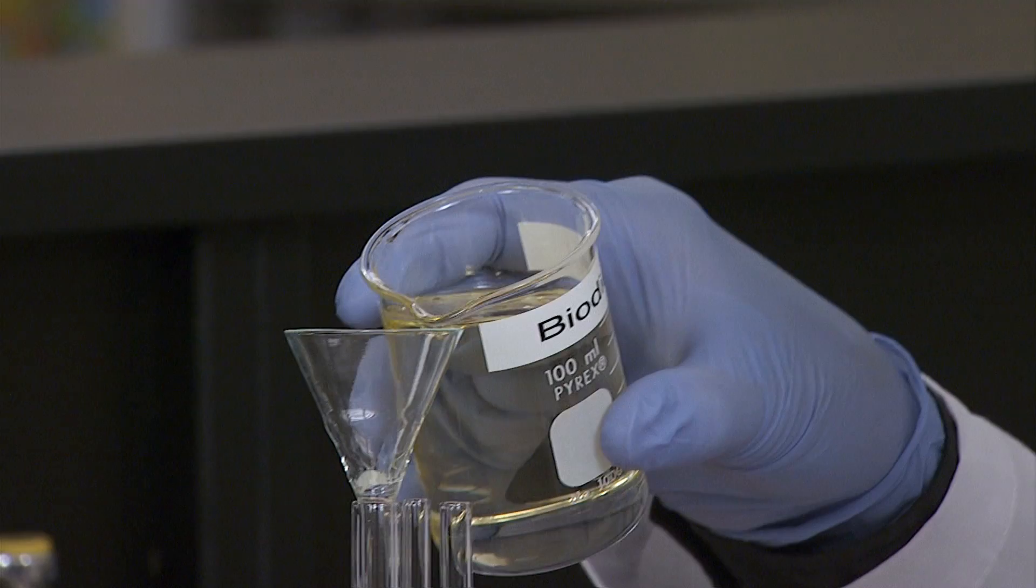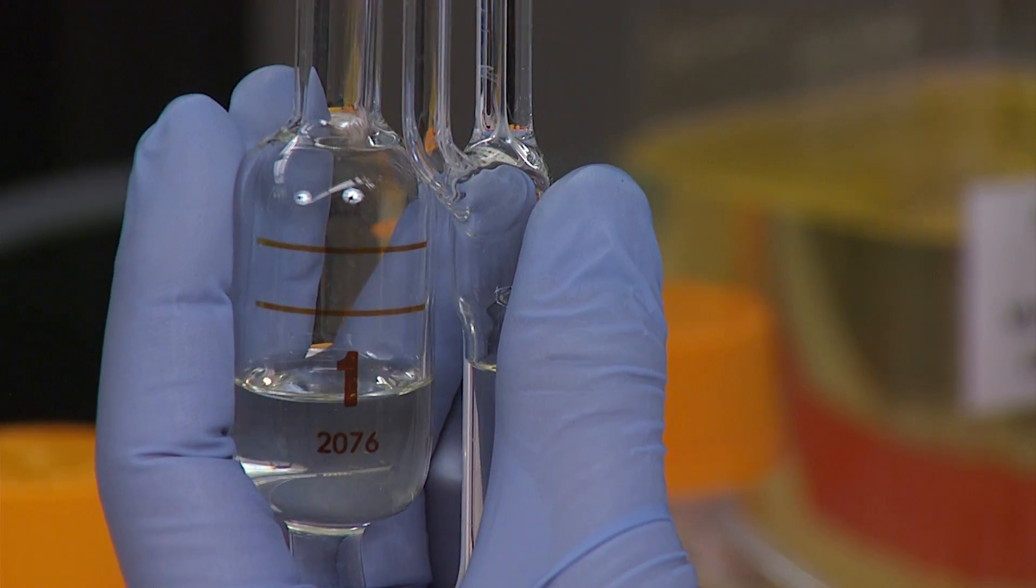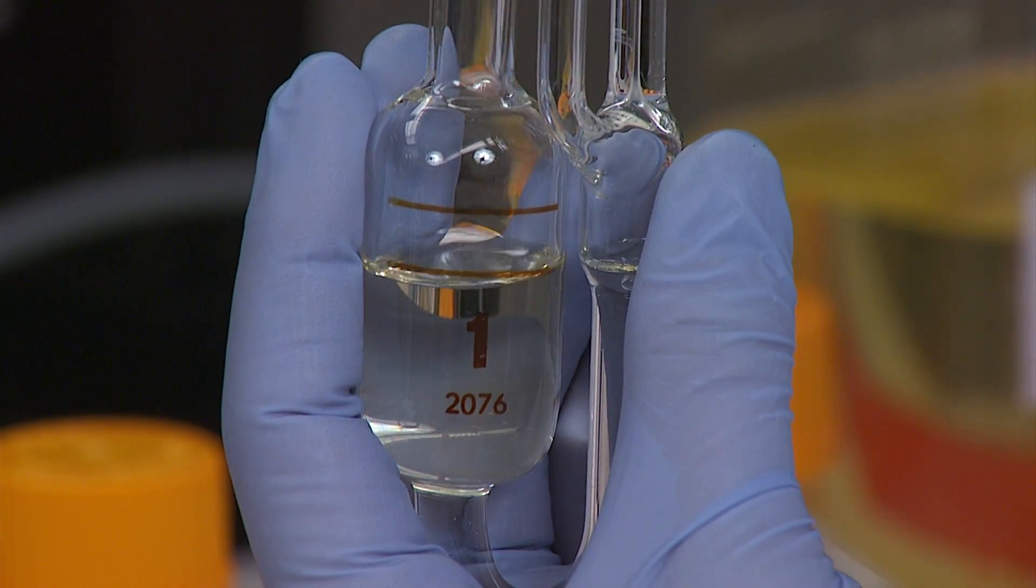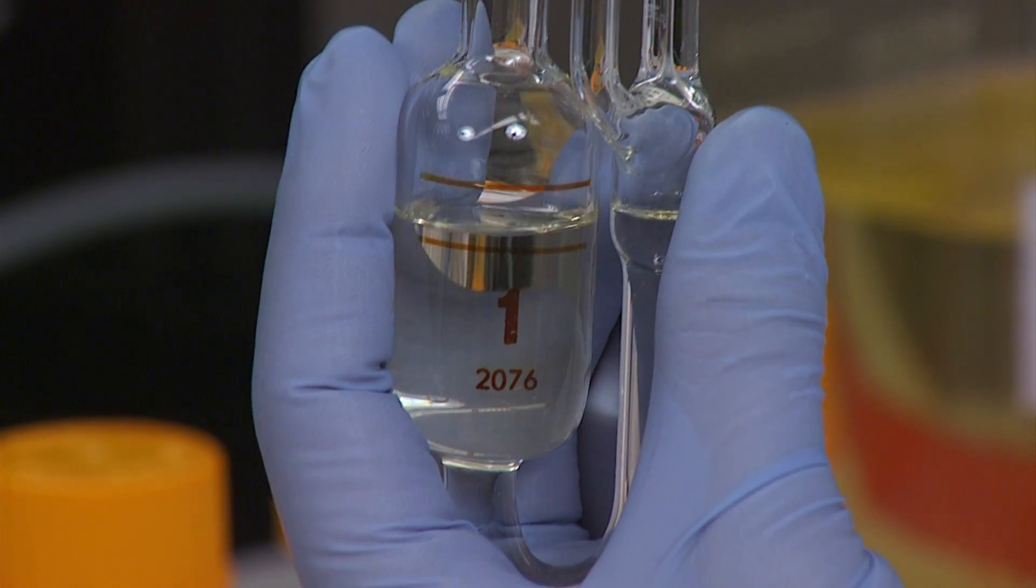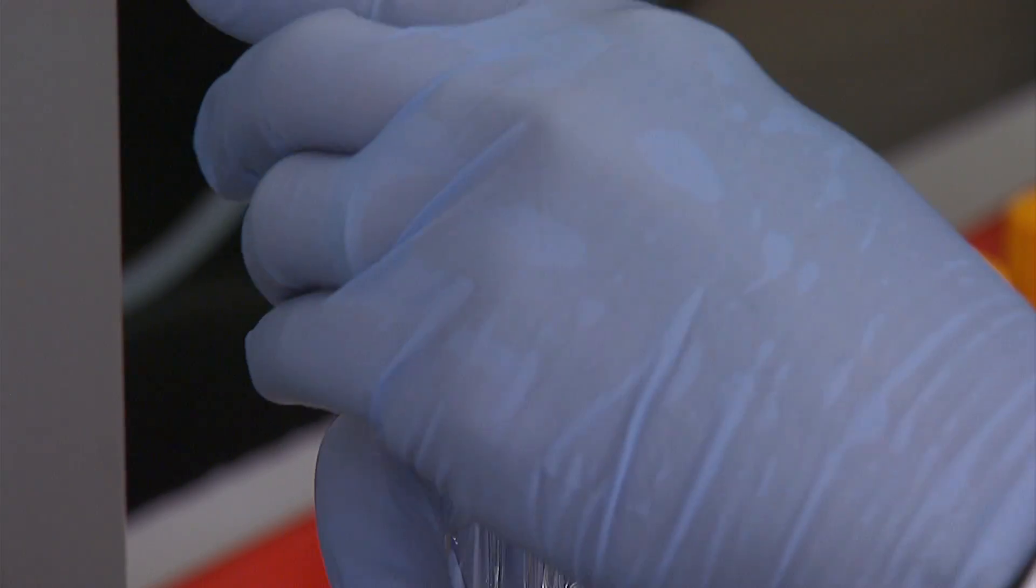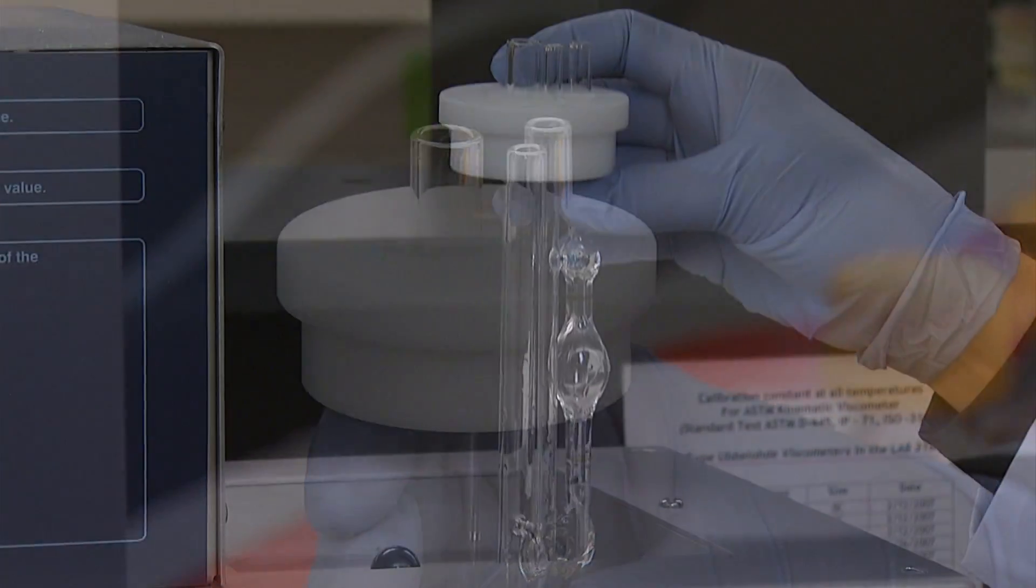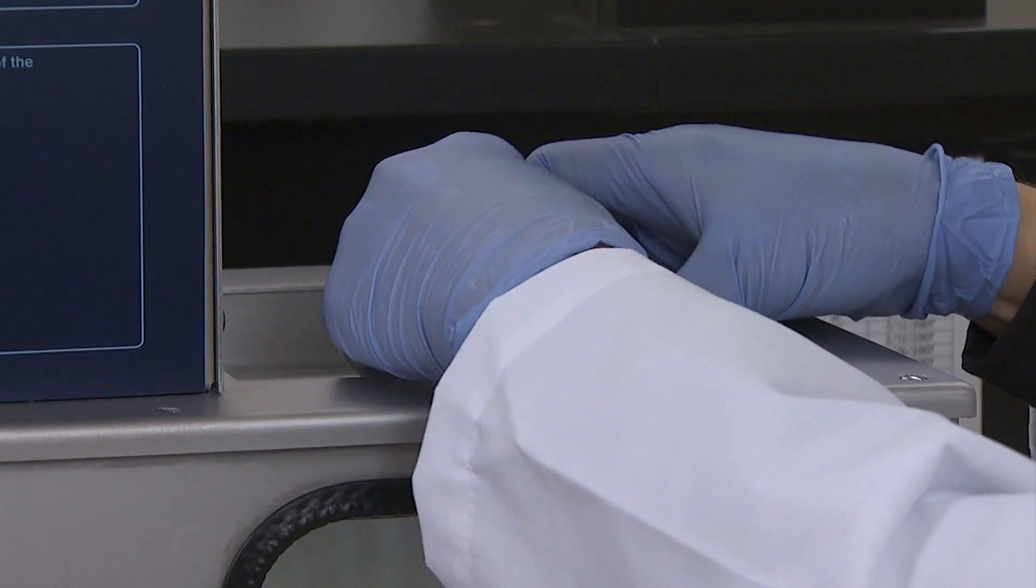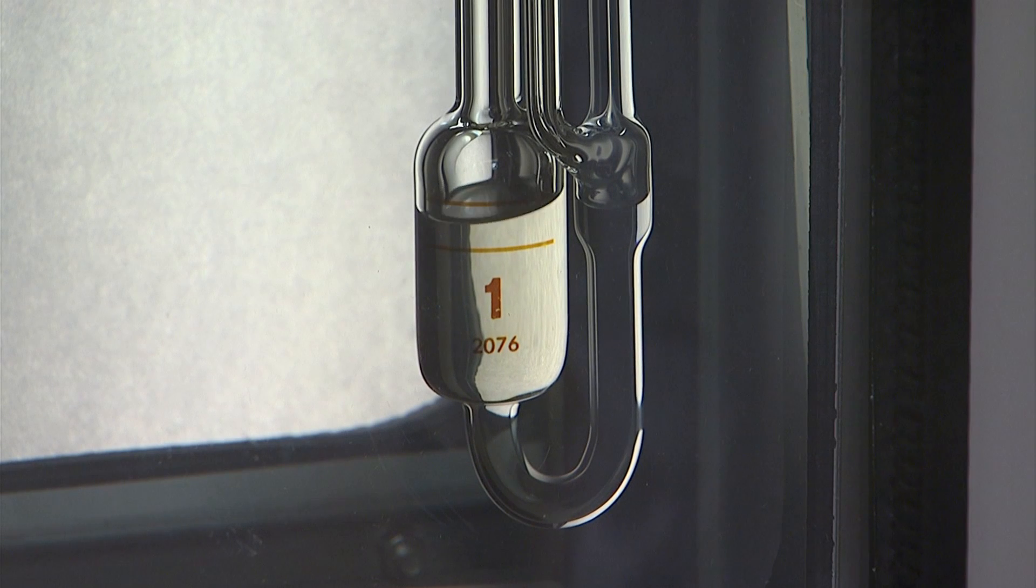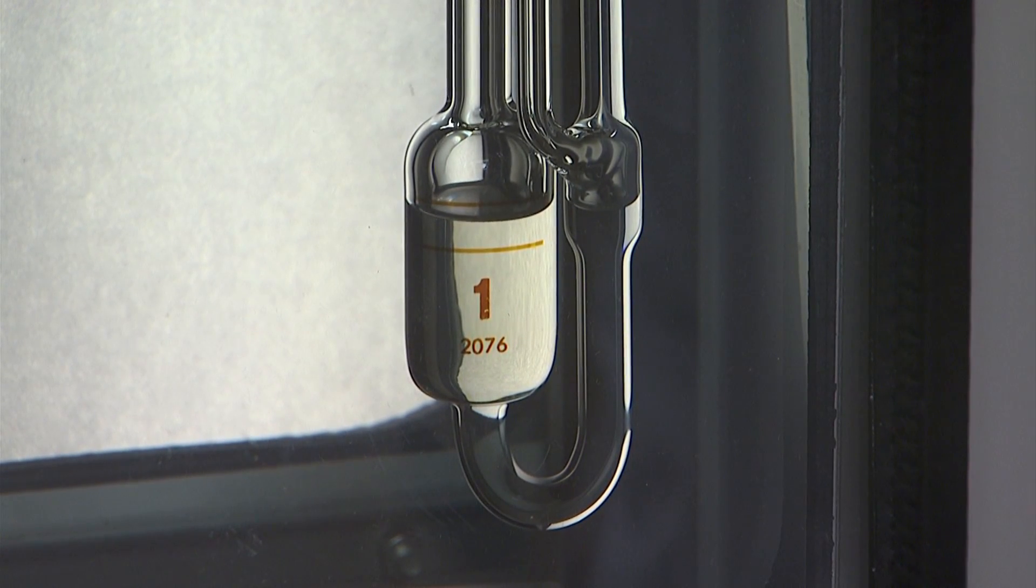Carefully transfer the sample to the viscometer with the final fluid level between the two lines on the reservoir bulb. The reservoir bulb is the largest section of the viscometer and will have the size and serial number printed on the outside. Equip the viscometer with a holder and place it in the bath. The holder should sit firmly in one of the top openings of the bath and the viscometer should be held securely. Allow the sample temperature to equilibrate by leaving the viscometer in the bath for at least 30 minutes.